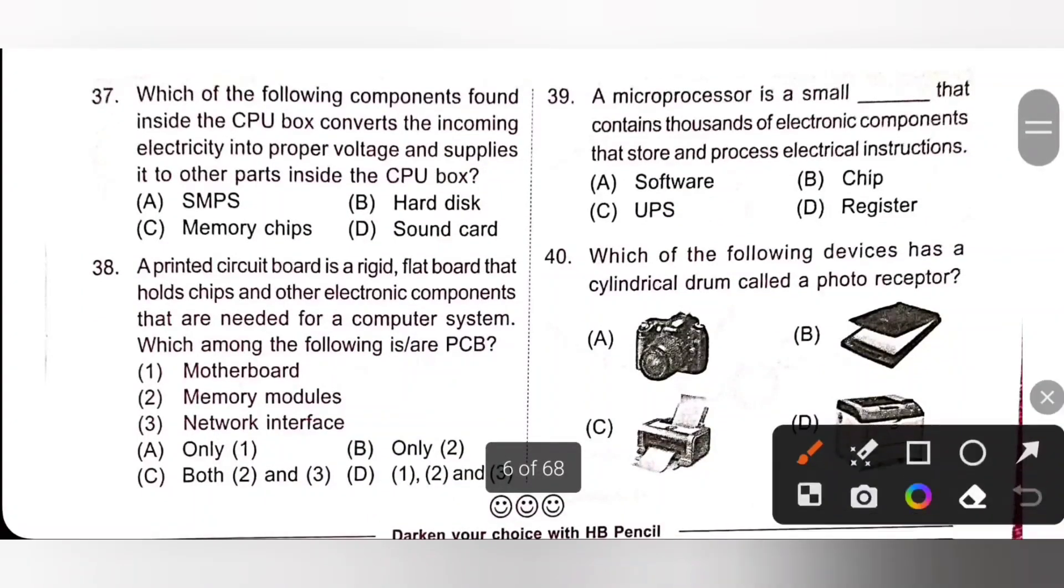Question 37. Which of the following components found inside the CPU box converts the incoming electricity into proper voltage and supplies it to other parts inside the CPU box? It is switched mode power supply, that is SMPS. SMPS is an electronic device that is used for managing the proper voltage. Option A is the correct answer.